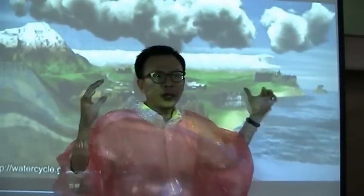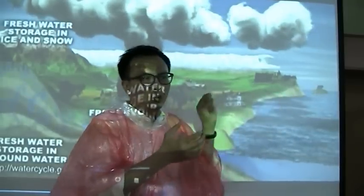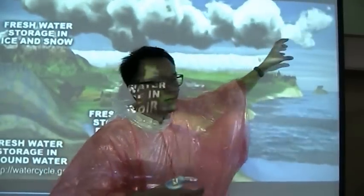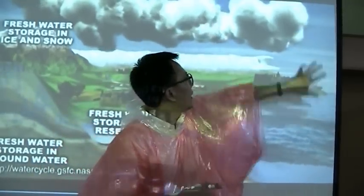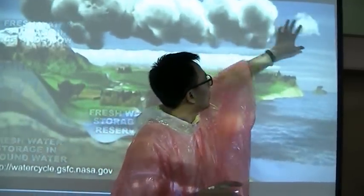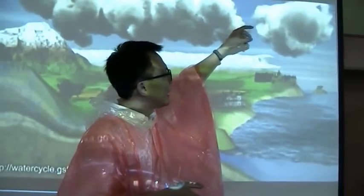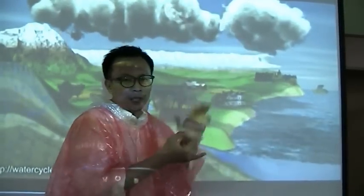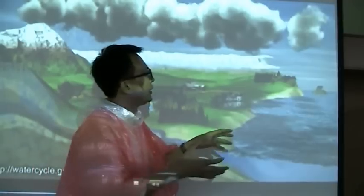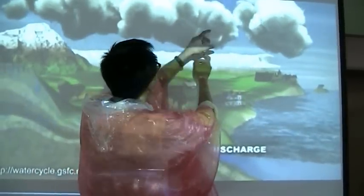When the water vapor comes into contact with the cooler atmosphere, it loses heat and condenses itself into water droplets. So evaporation and condensation — when it turns into tiny water droplets, what is formed is the cloud. Clouds are actually made of water droplets.